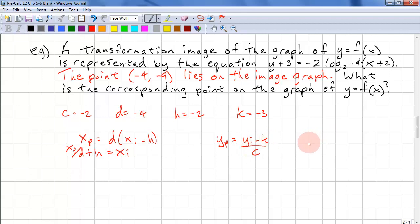And the other one is y_p equals (y_i minus k) over c. Recall we derived that from c times y_p plus k equals y_i. Again, that's a two-step algebra problem.